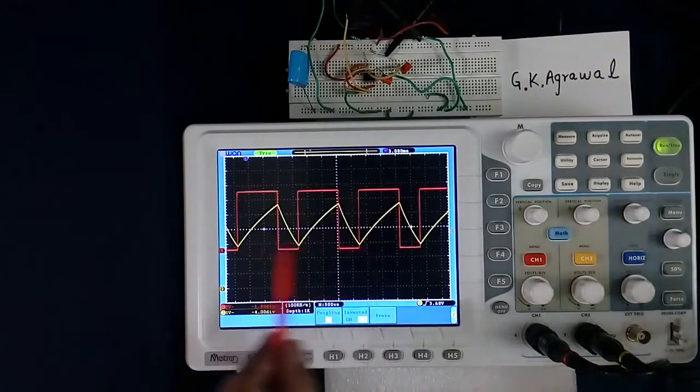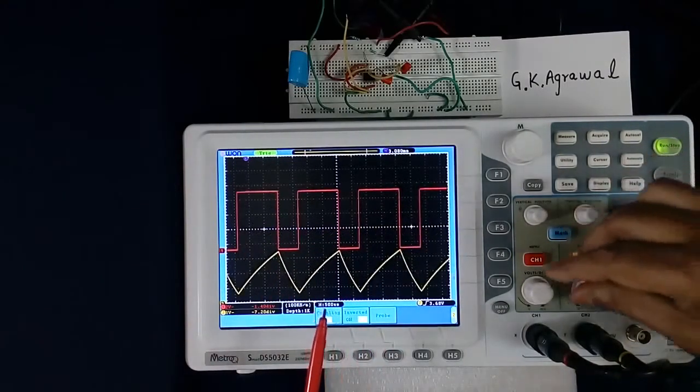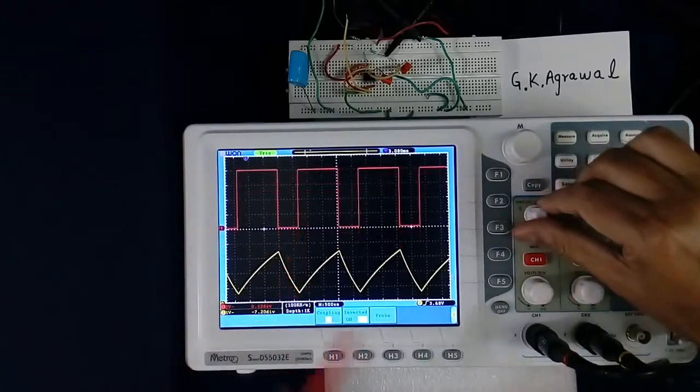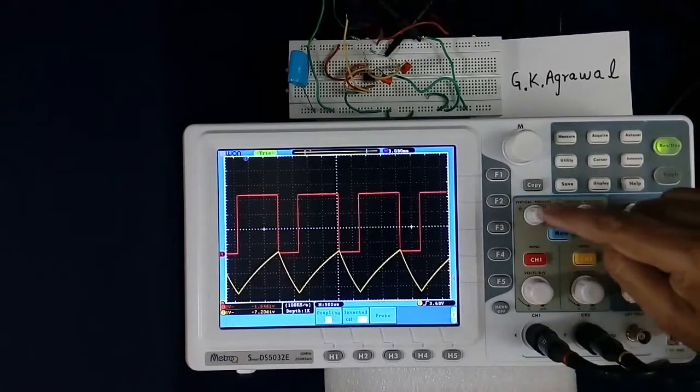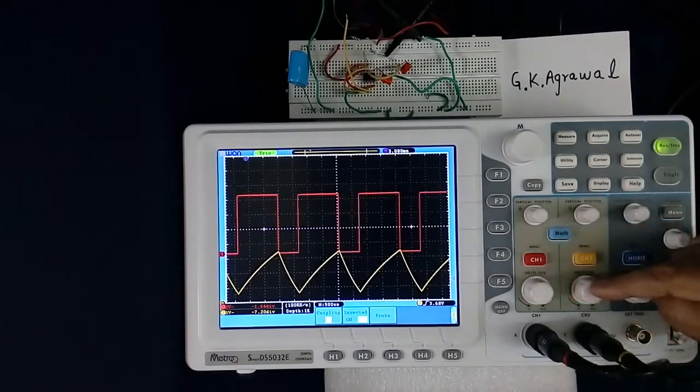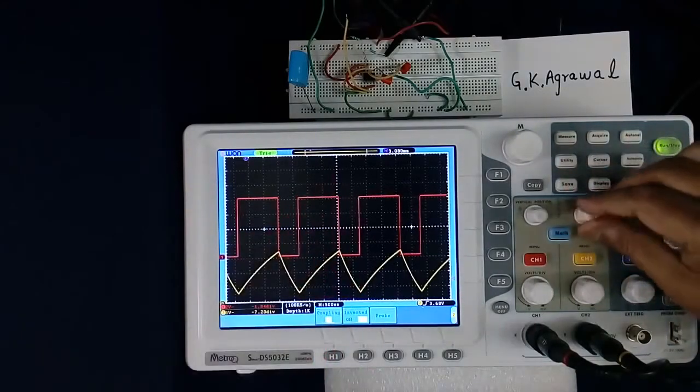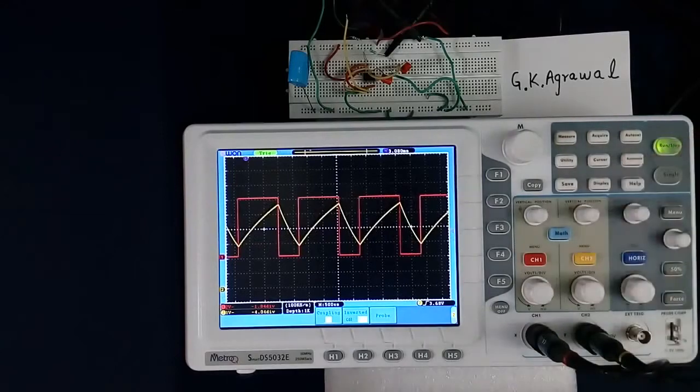First we overlap these two. Now I have overlapped them. They may be positioned differently, so we bring them together using the vertical position control. There are two vertical position controls - one for channel 1, one for channel 2. So we bring both to the middle, like this.